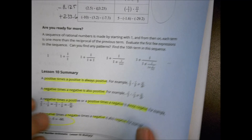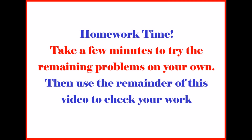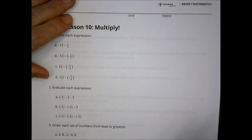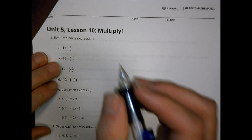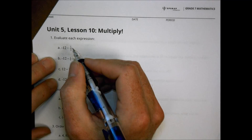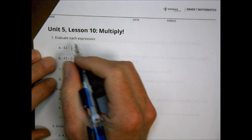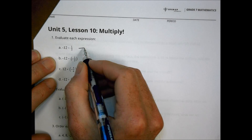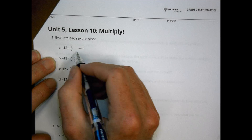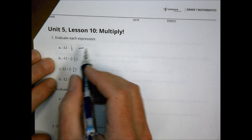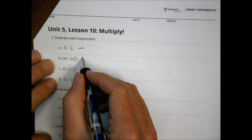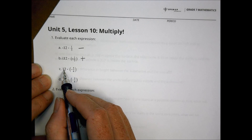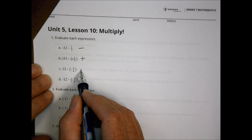Let's take a look at tonight's homework, which involves a lot of multiplication of positive and negative numbers — including fractions and decimals. I'll help you with the positive and negative side of things and you can do the math part. So: a negative times a positive means the solution should be negative — you can work out 12 times one-third on your own. A negative times a negative should give a positive solution. And here a positive times a negative gives a negative solution.